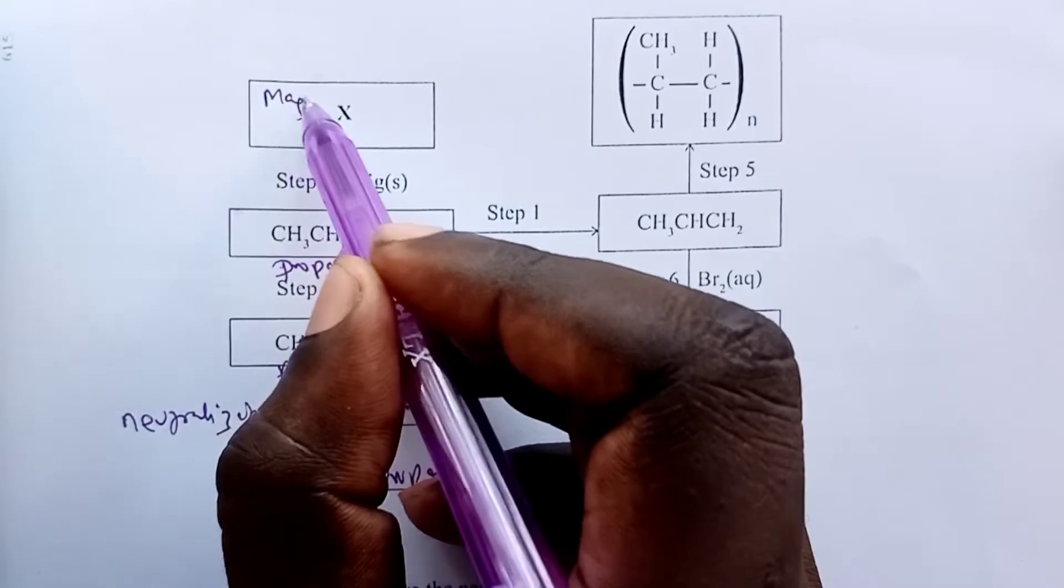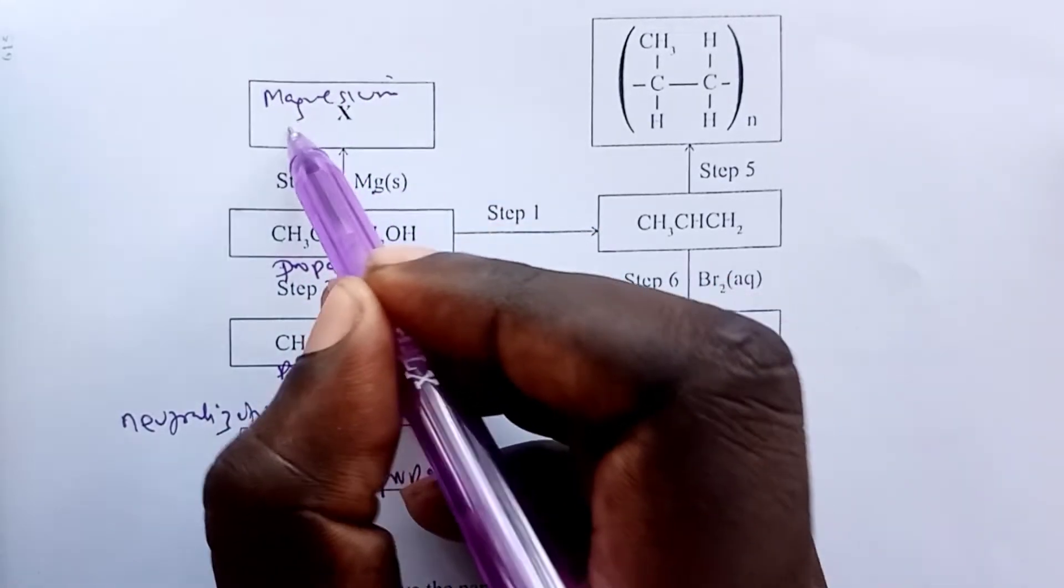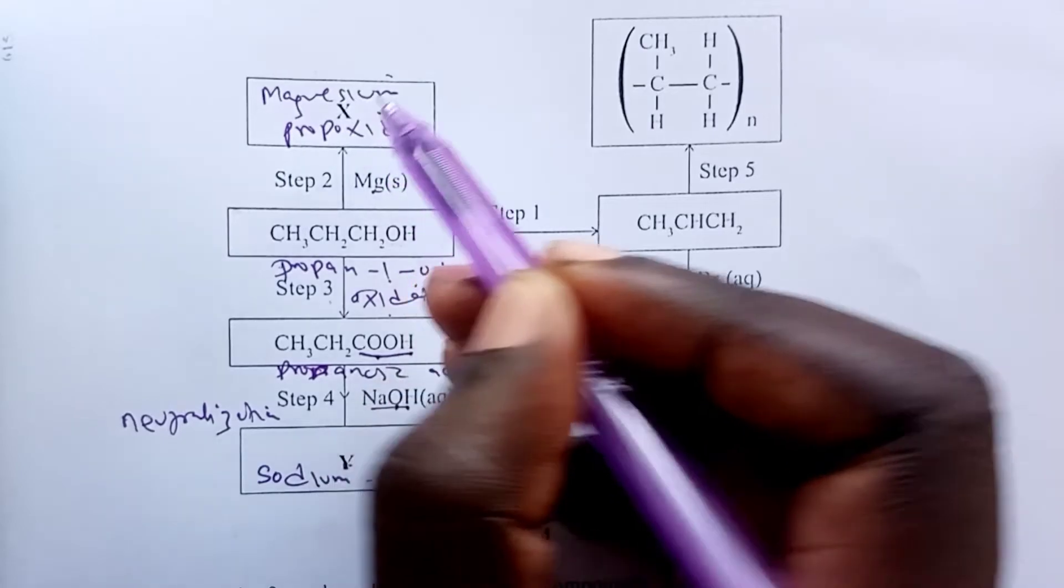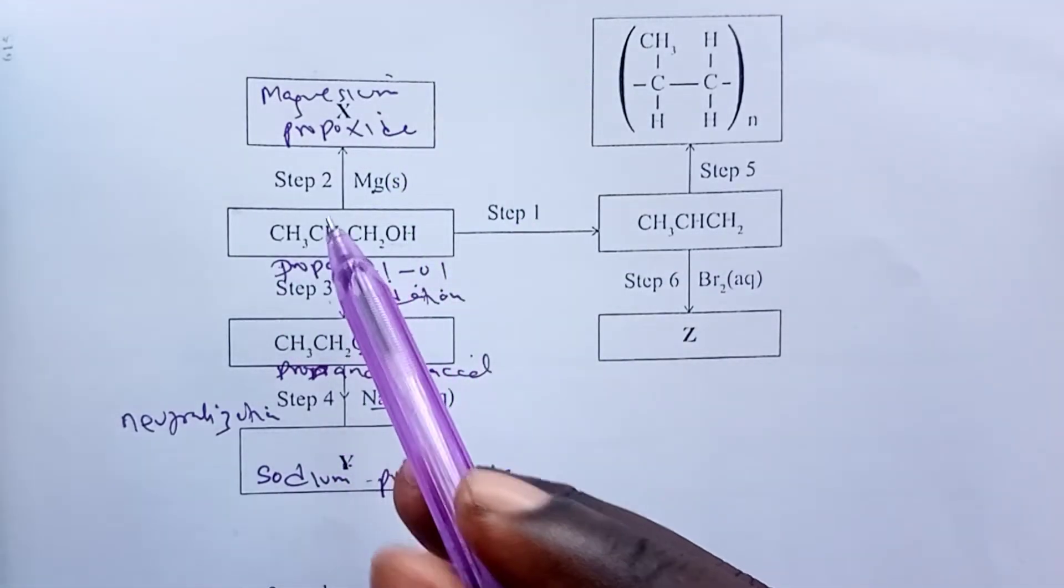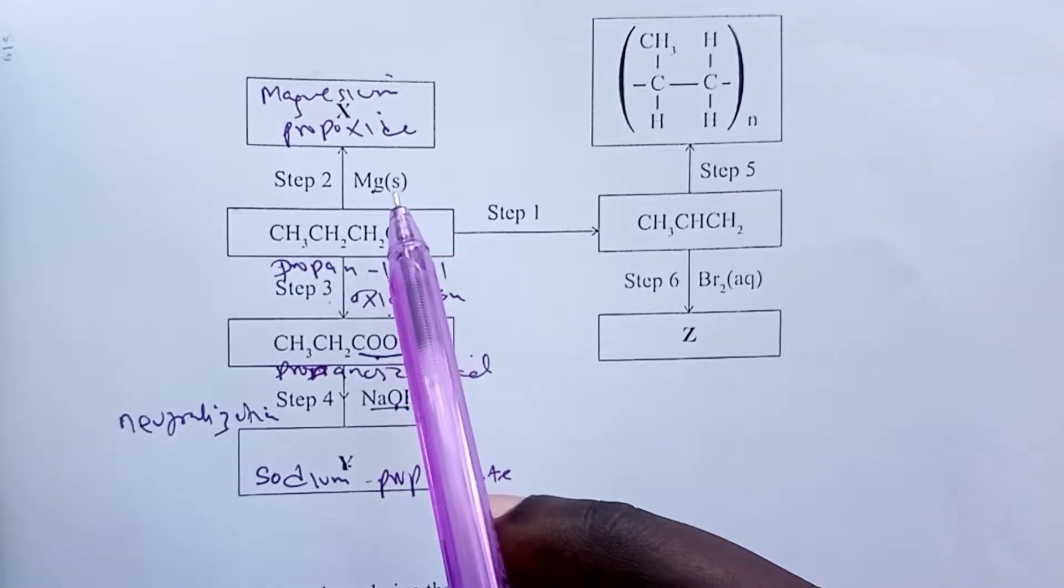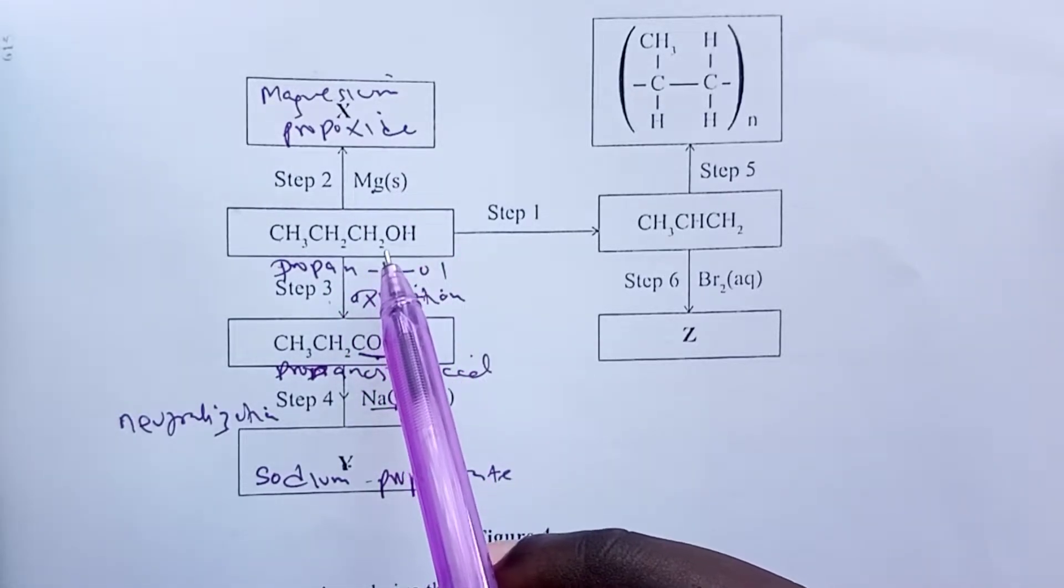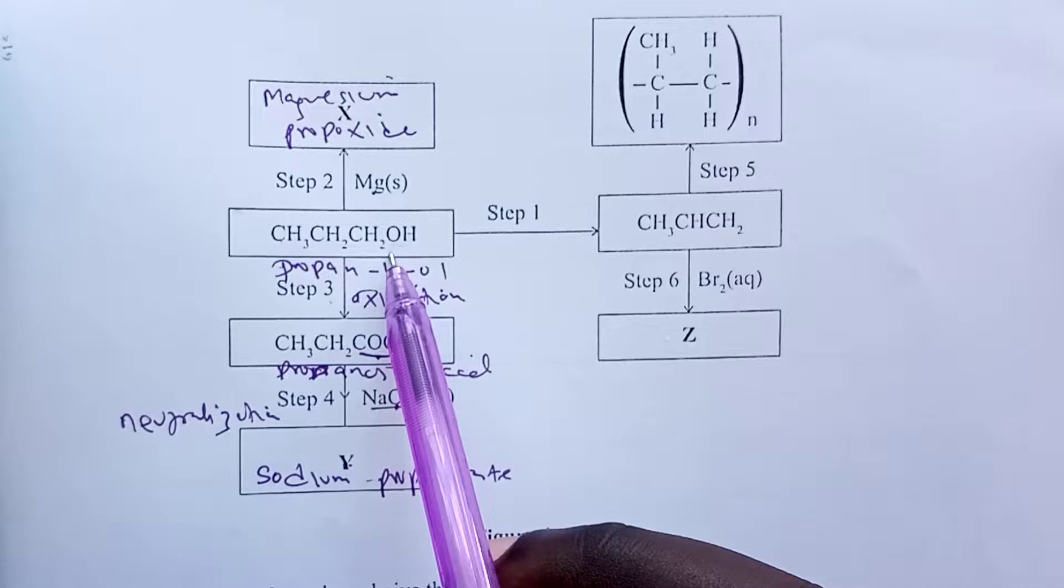We normally obtain compounds that are generally called alkoxides. And because for our reaction the number of carbons are three, our product here will be called magnesium propoxide, simply because the number of carbons are defined—they are three. Otherwise, generally, a reaction between a metal and an alkanol gives what we normally call metal alkoxide. So the alk there is named depending on the number of carbons. If they are two, it is ethoxide.